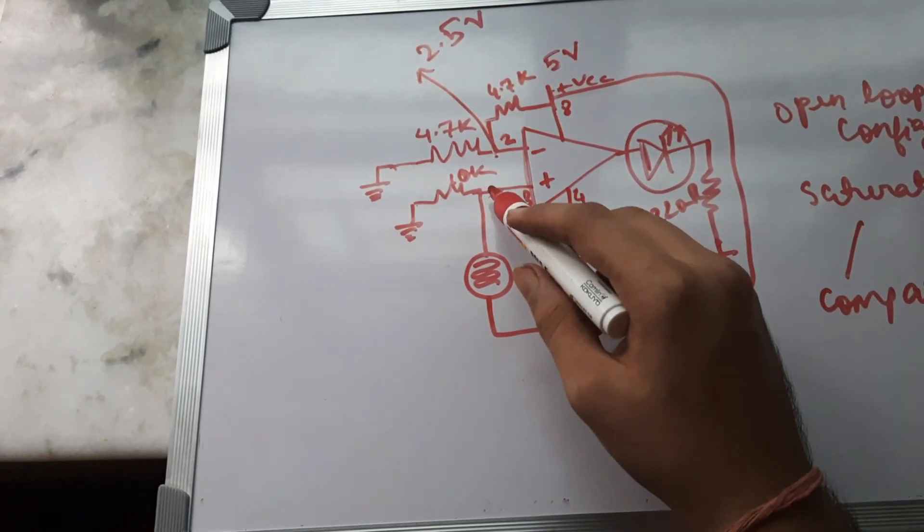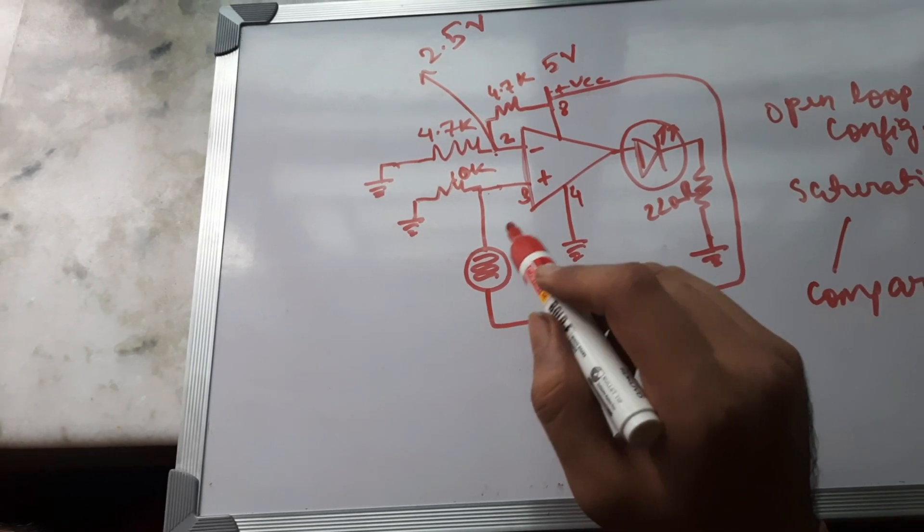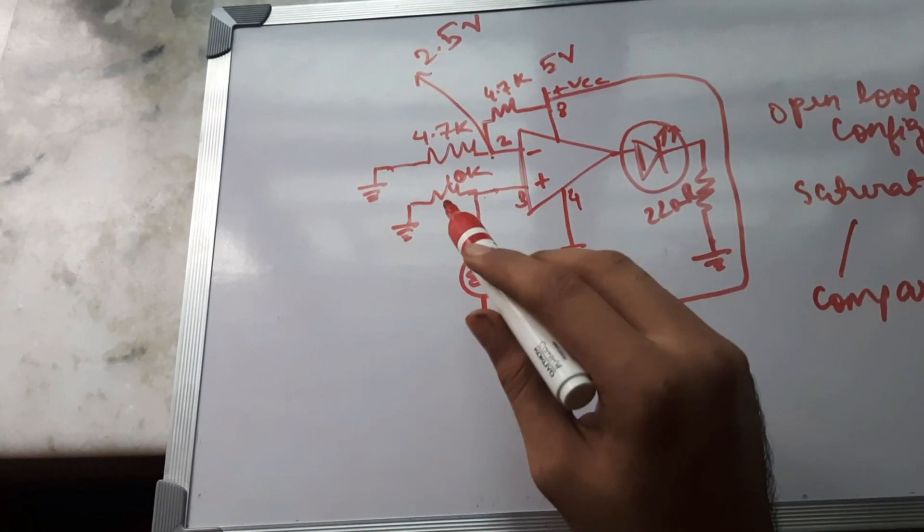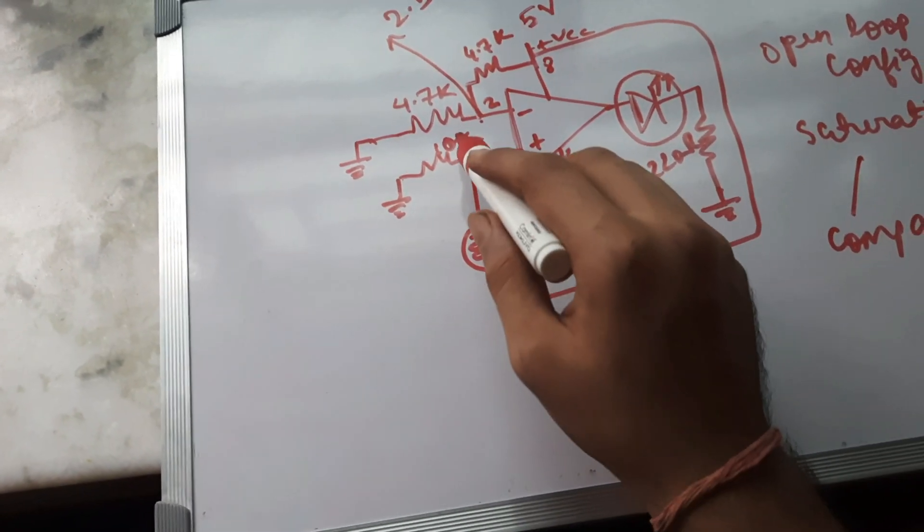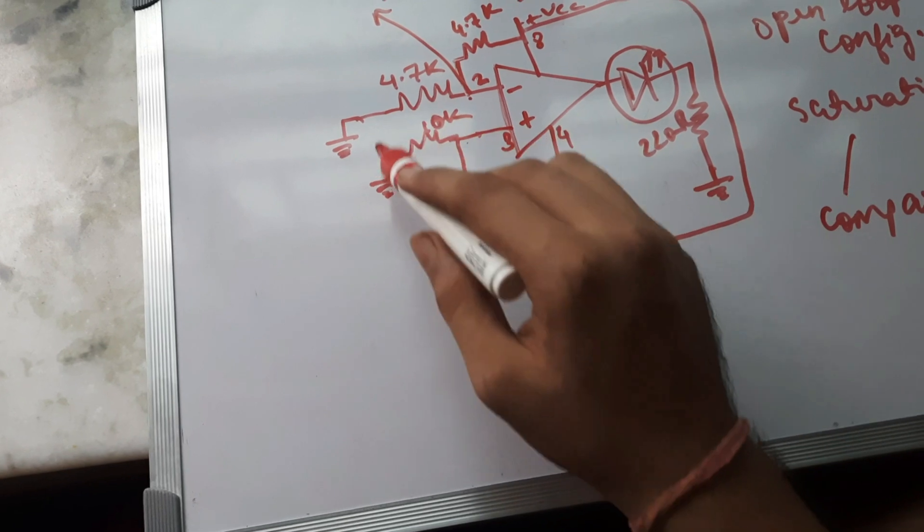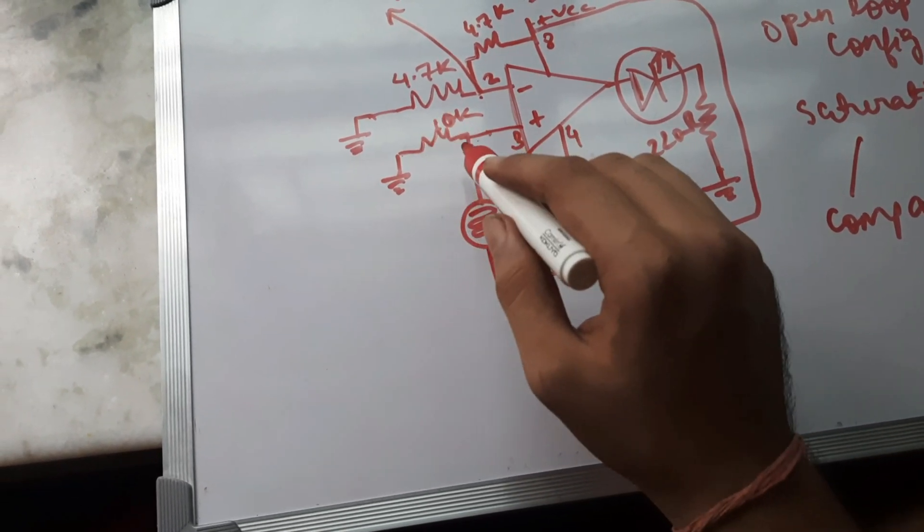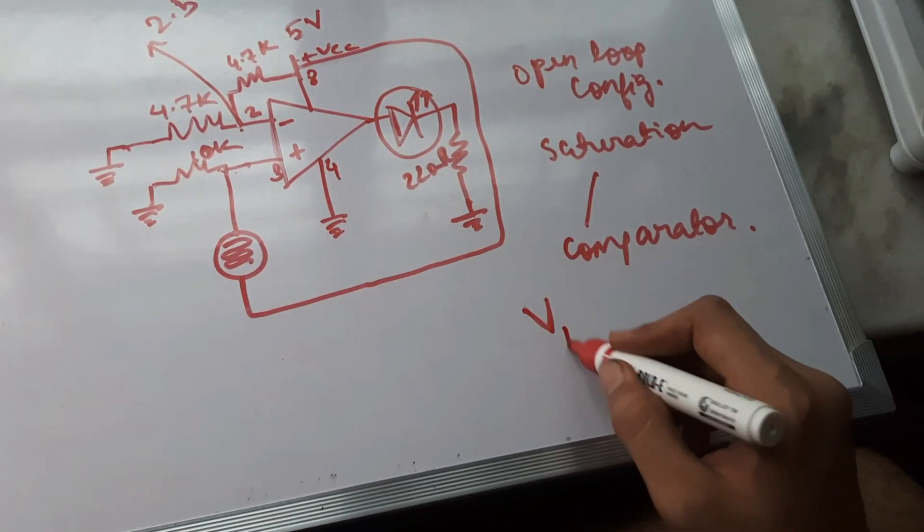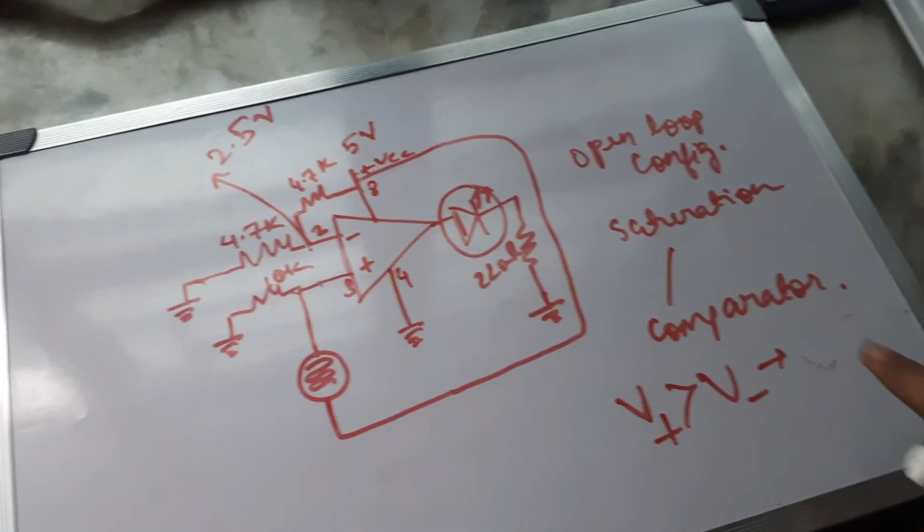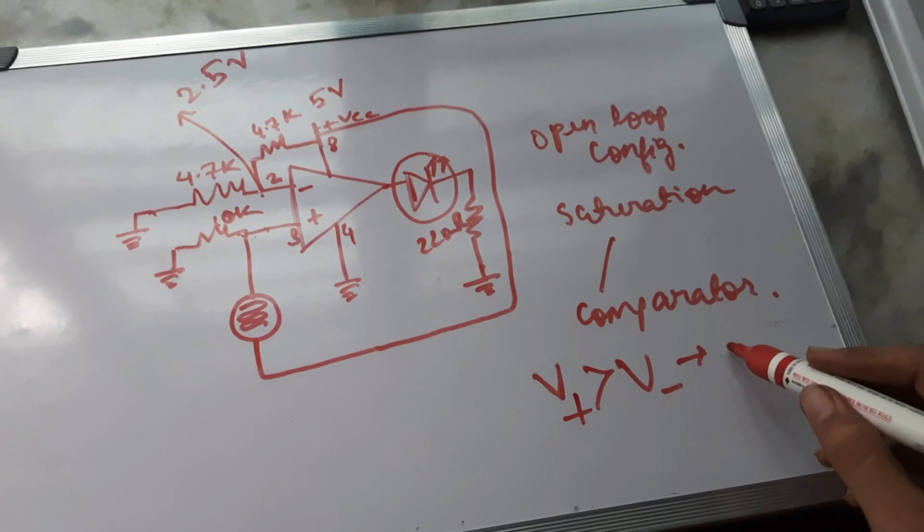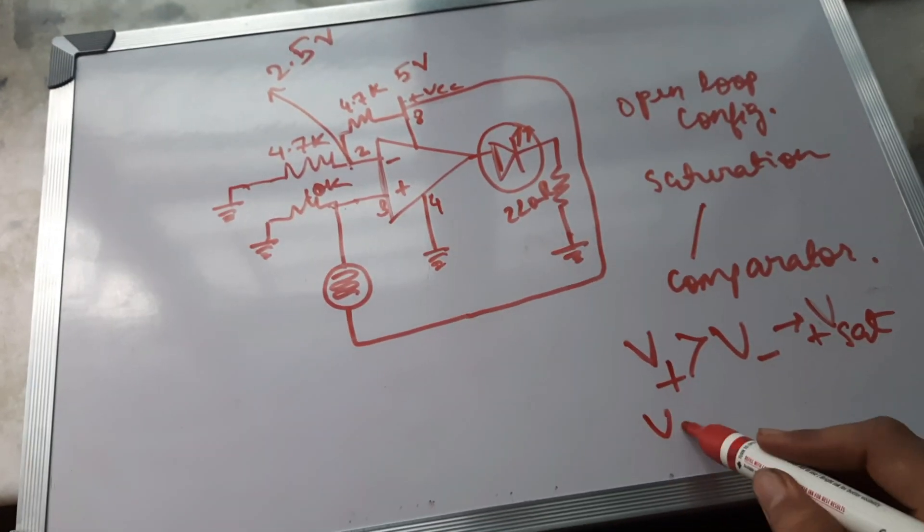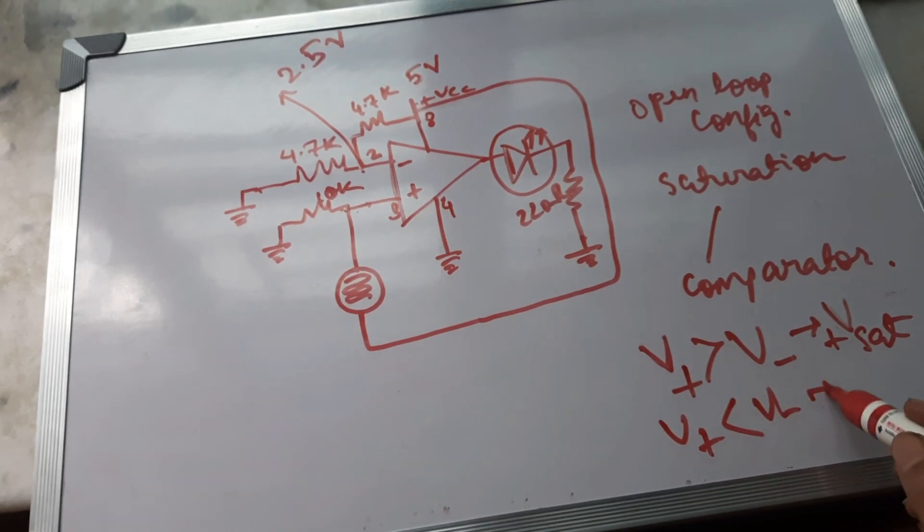But if there is any light falling on this LDR, then it will allow the flow of current. And since there is a flow of current, definitely because of this resistor there will definitely be a voltage drop here. Whenever this V+ voltage is greater than V- voltage, the output voltage which we shall be getting is +Vsat. Whenever V+ is less than V-, we'll be getting a -Vsat.